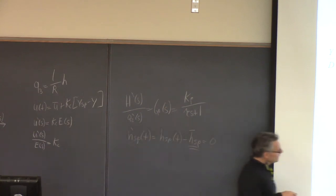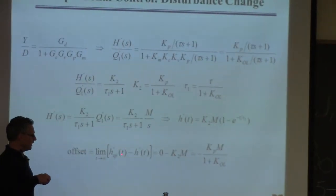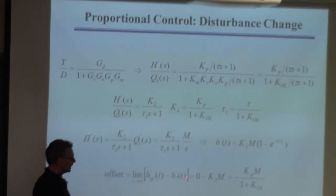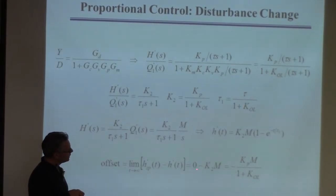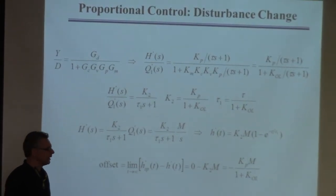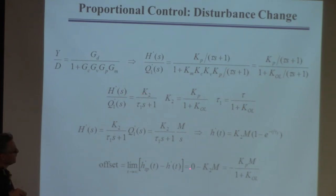So when I take this limit here, I know this thing is zero — it's zero all the time because it's not changing. The limit as t goes to infinity, just evaluate the solution: it's just k2 times m. You can use the definition of k2 here, and then you can rewrite this thing to look like this.